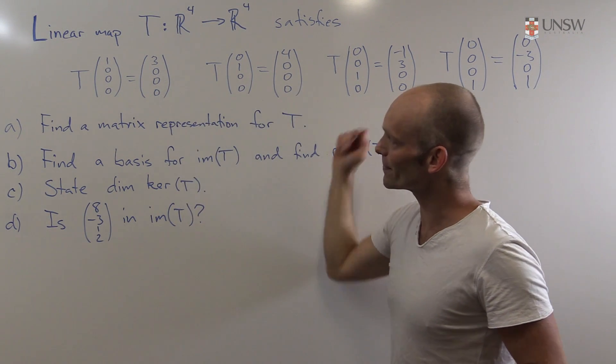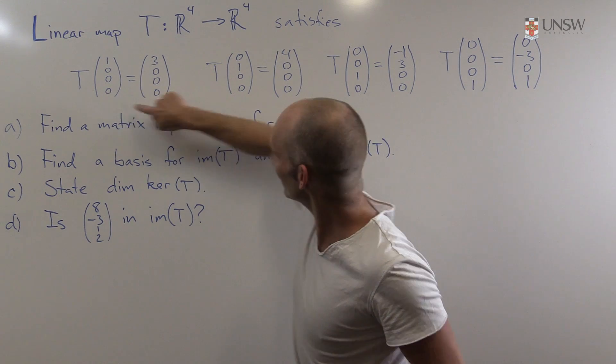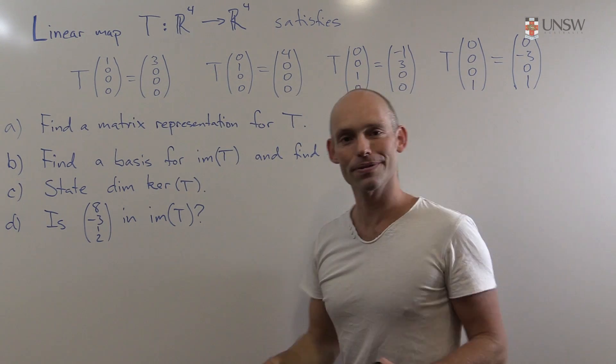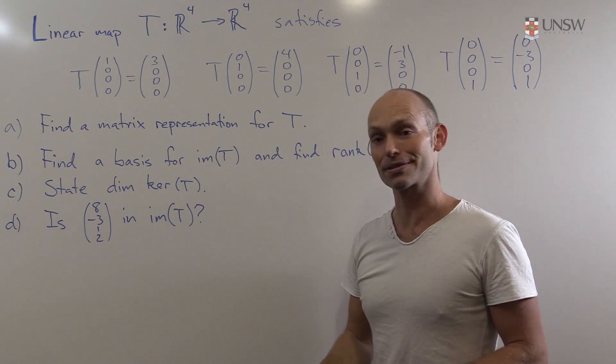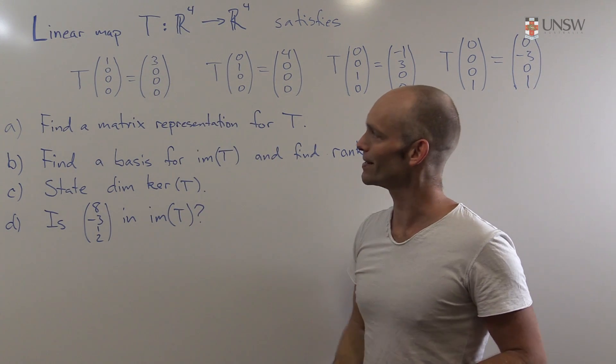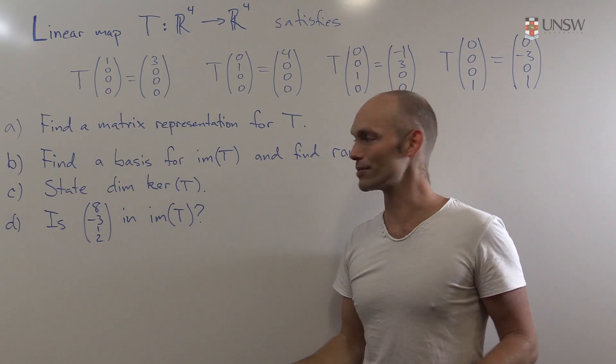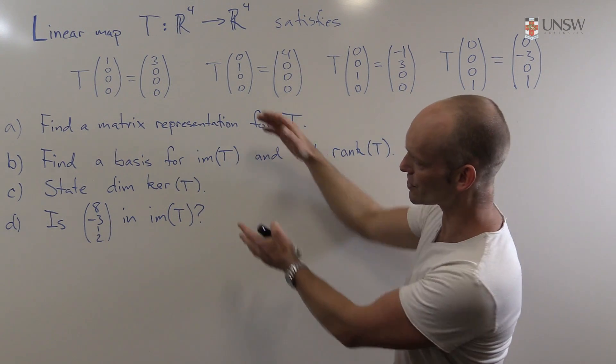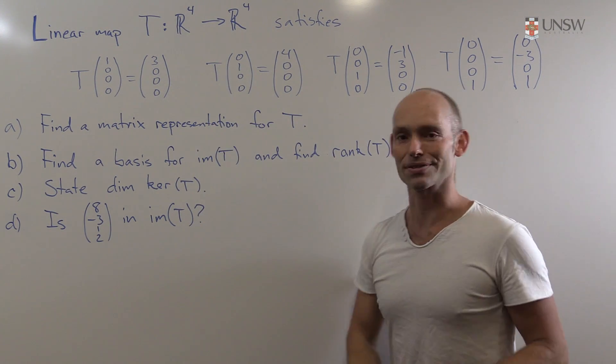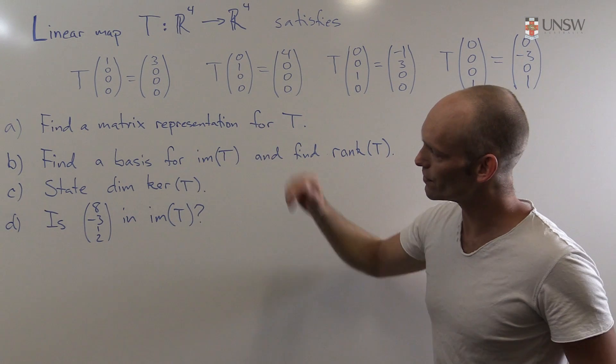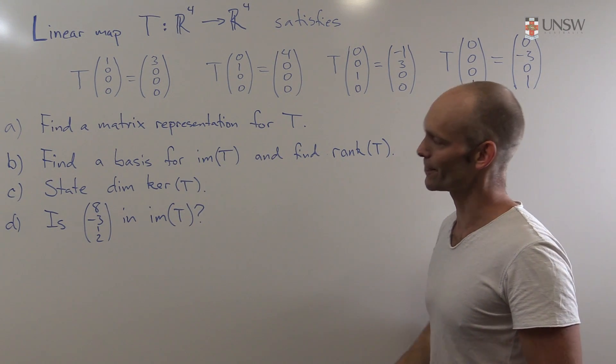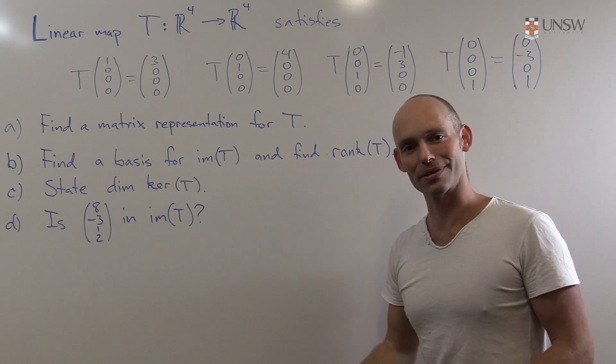If we look at what we've got here, we've got this one, this one, this one, and this one. They are all the four standard unit basis vectors for R^4. So we've got four pieces of information, and we'll use those four pieces of information to answer these four questions that we've got here. So first of all, find a matrix representation for T, and then three more questions which we'll get to in turn.